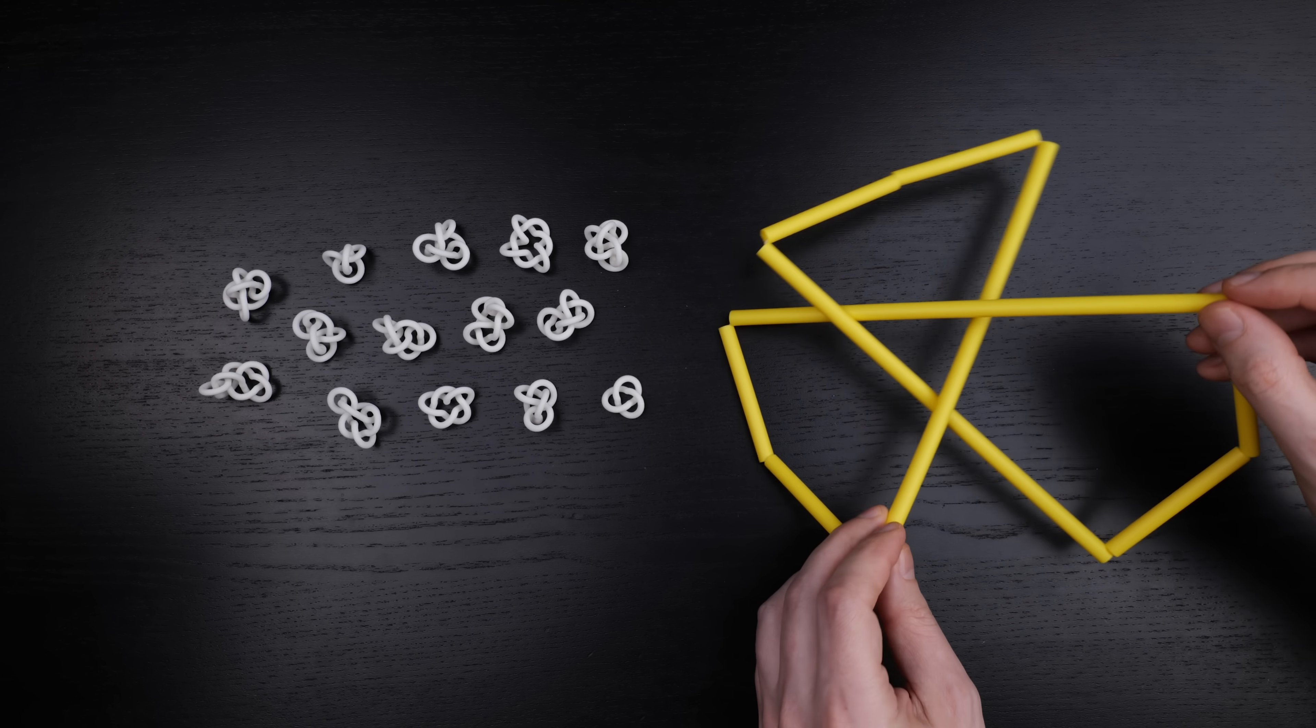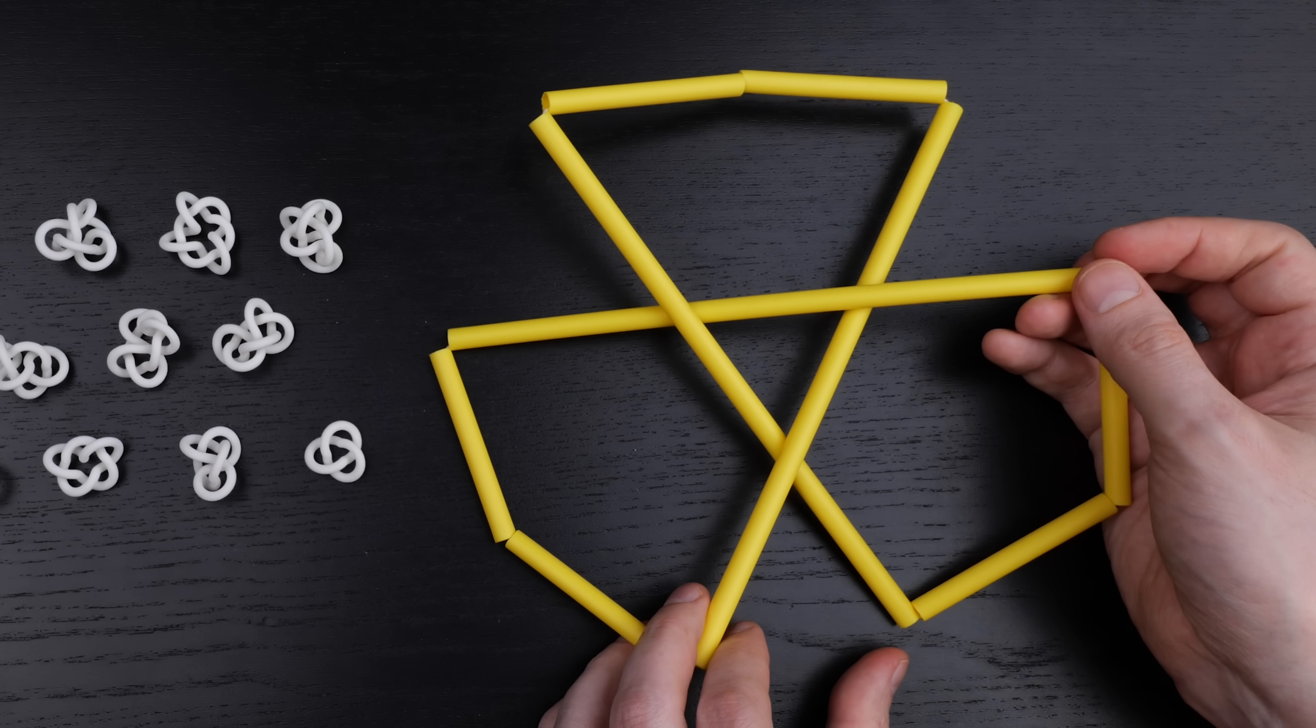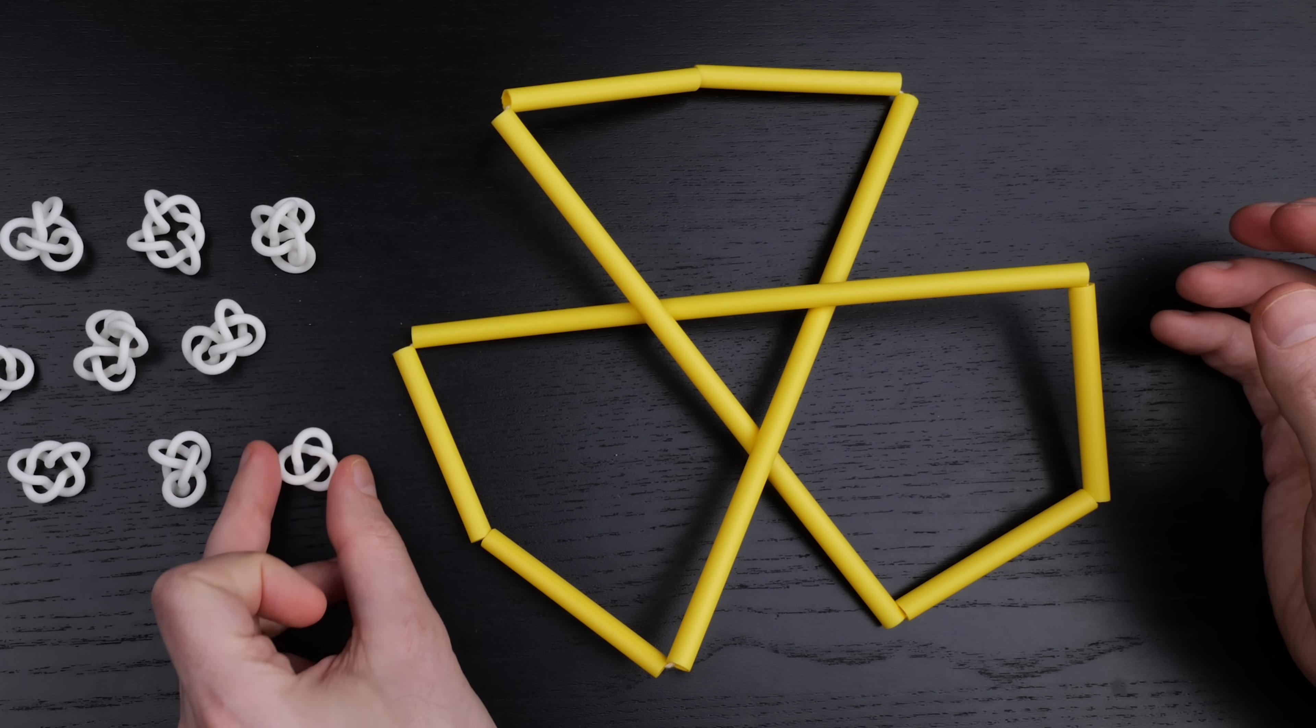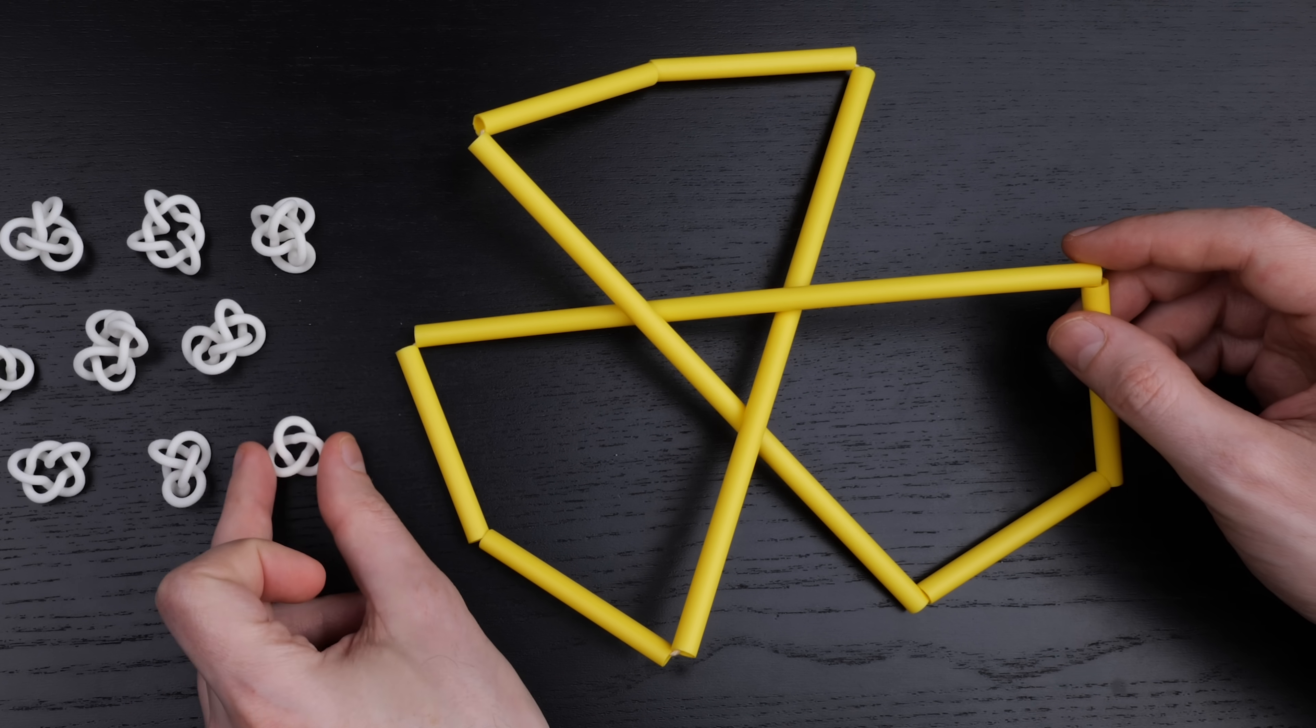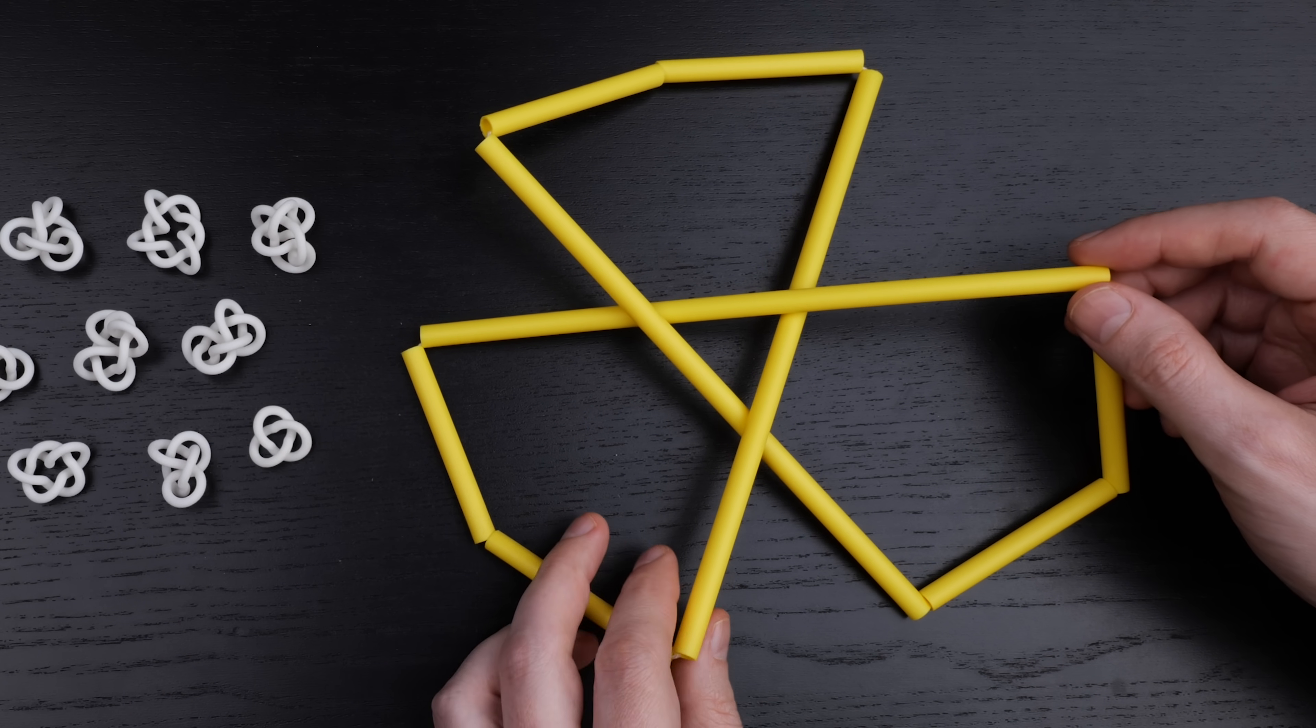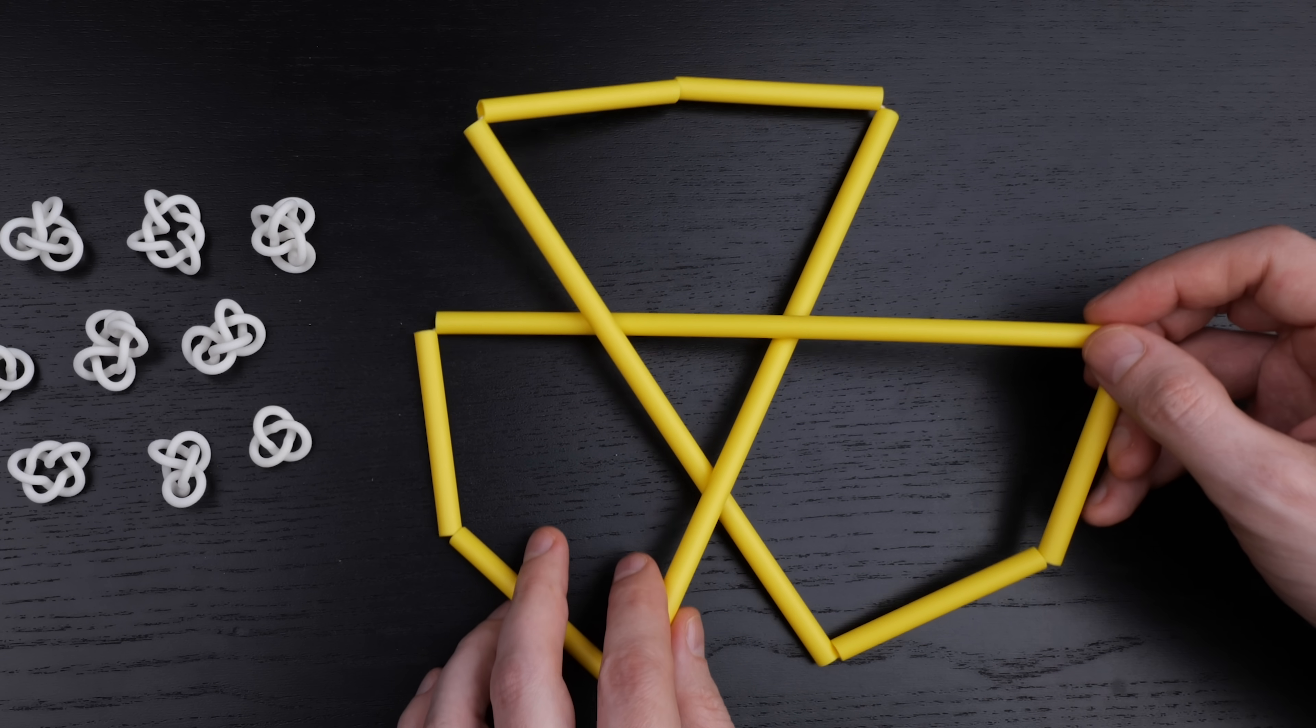That is, you can make a version of the knot which is made from a finite collection of line segments connected end-to-end. For example this is a polygonal version of the trefoil knot made from nine line segments. And the idea is that if you can make a polygonal version of the knot then it cannot be infinitely complicated, it cannot be wild, so instead it's tame.